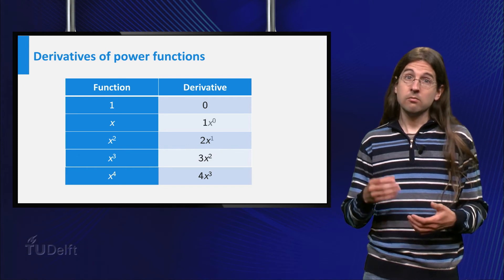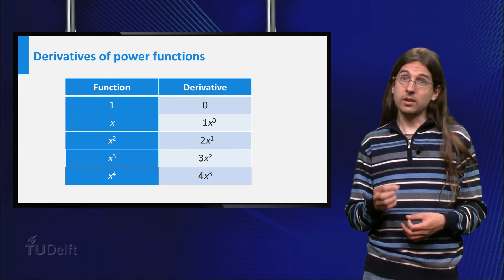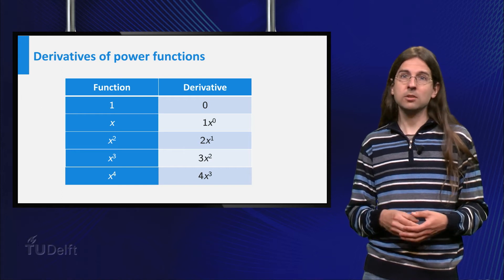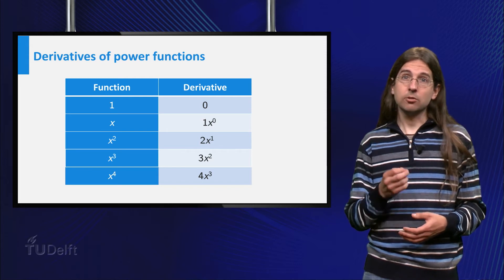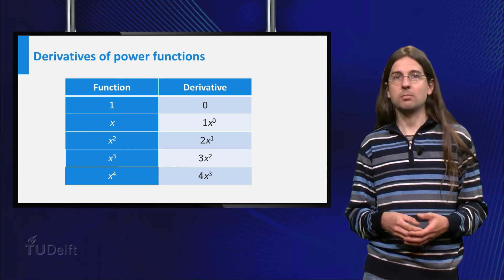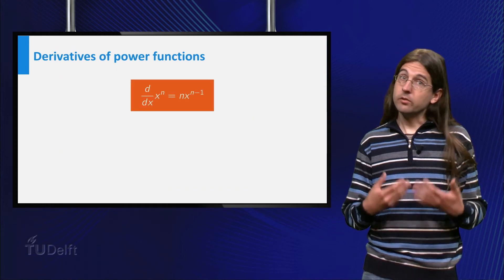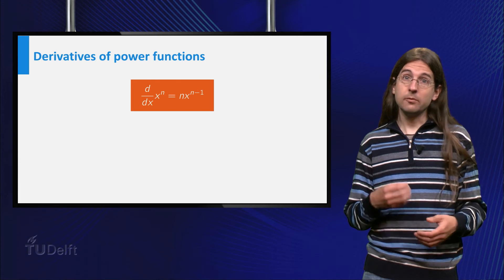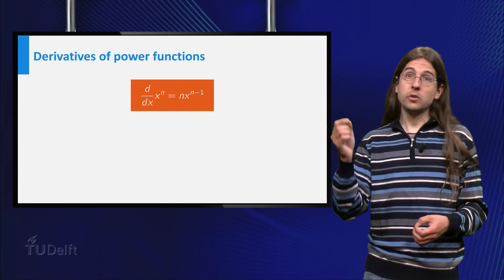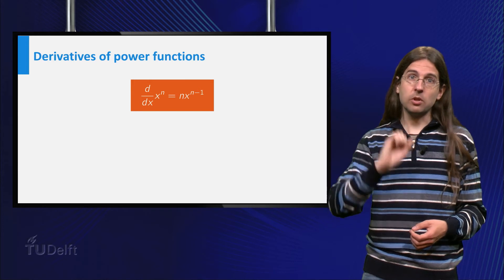Writing x equals x to the power 1 and noting that x to the power 0 is just 1, we see that the derivative of x to the power n equals n times x to the power n minus 1. It follows that differentiating power functions involves the rule: put the exponent in front and then reduce the exponent by 1.